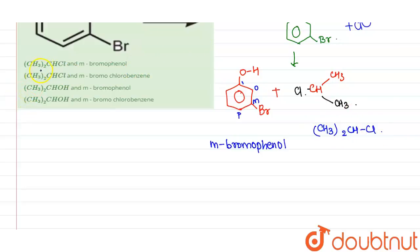So the first product that is given to us is (CH3)2CHCl and meta-bromophenol. So it matches with the product that is formed here. So this is the correct answer.